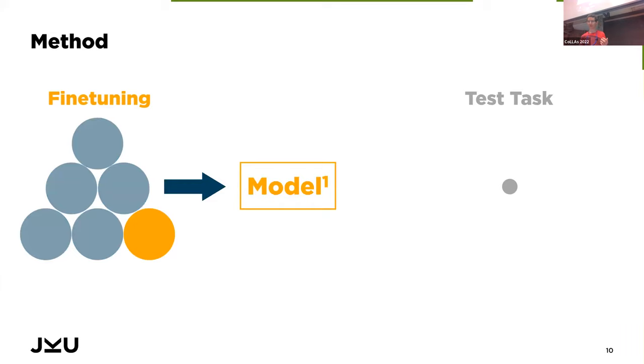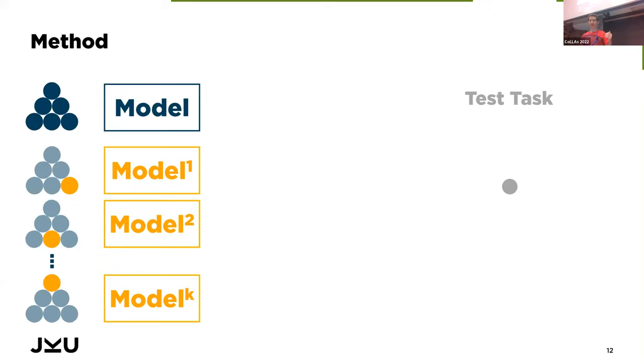To get this subspace, what we do is we consider each training task individually and we fine-tune that pre-trained model on each of those tasks individually. So we take the first task, we fine-tune the model, and we get some fine-tuned model or adapted model that I've called model one here. Then we move to the next task—again we start with the pre-trained initialization, we fine-tune it to that task, and so on. This means we'll end up with lots of fine-tuned models that all started from the same initialization, and all of these fine-tunings are going to work quite well simply because we have lots of data on each individual task. So normal gradient descent is going to do a good enough job, most likely.